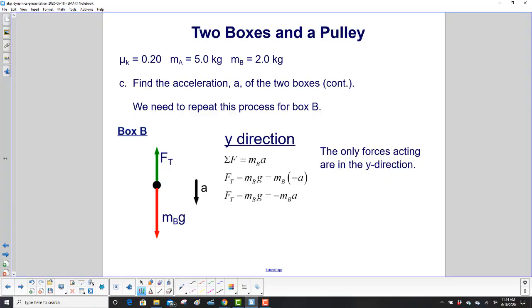Before we calculate the friction force on box A, let's go ahead and do box B here. We only have forces acting in the y direction, right? We've got tension going up and gravitational force going down. The acceleration is in the down direction also. So the sum of the forces is m sub b times A. Tension's positive, up direction. Gravitational force, negative, down direction. And acceleration is down, so we stick the negative A in there. And then we come up with tension minus m sub b g equals minus m sub b a.